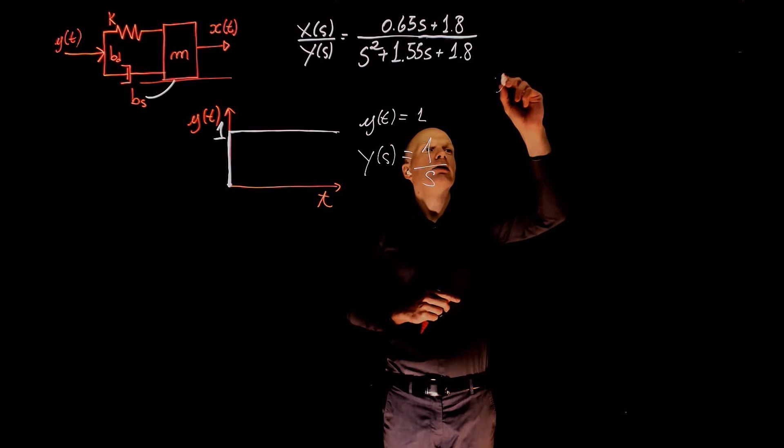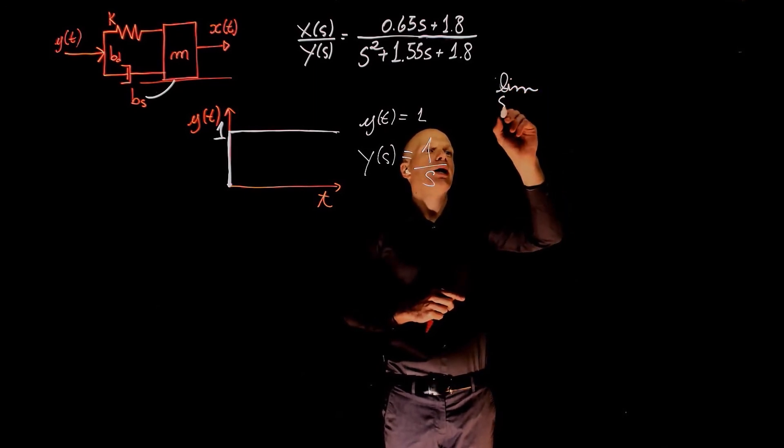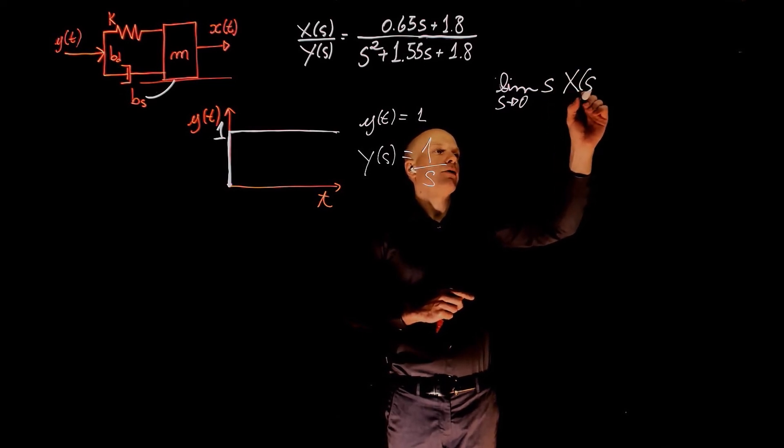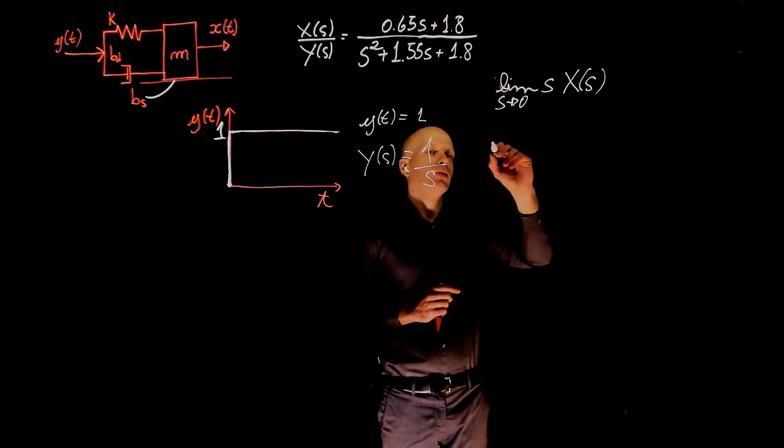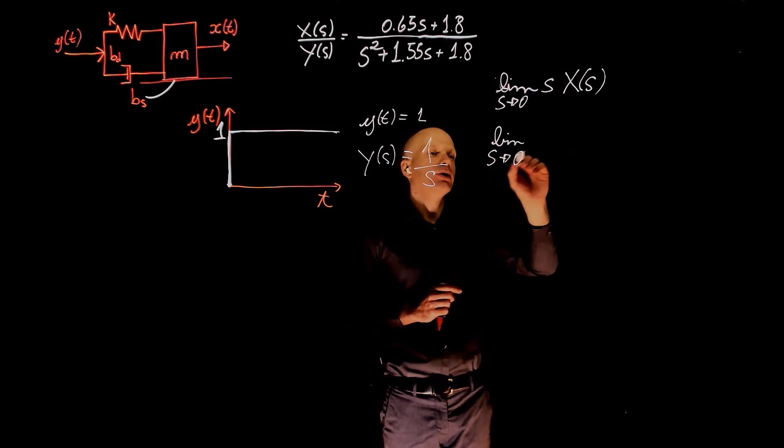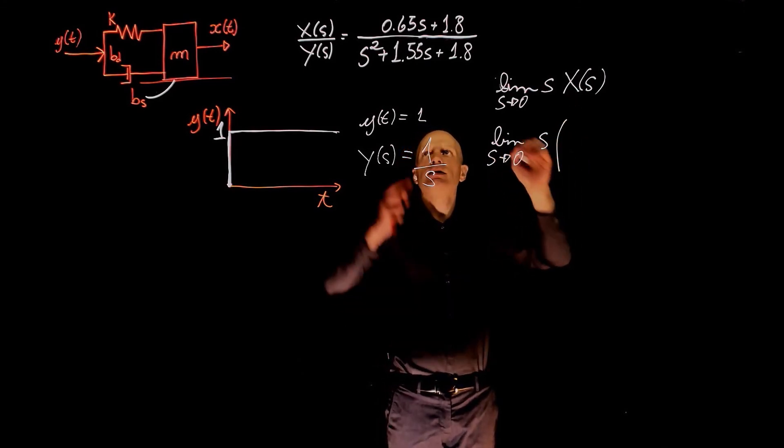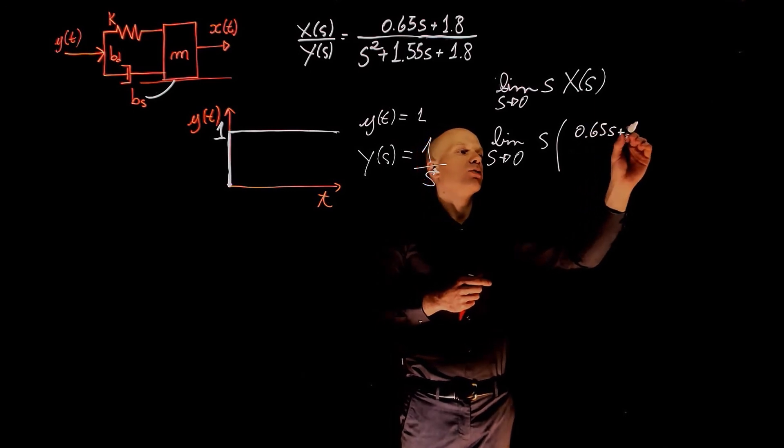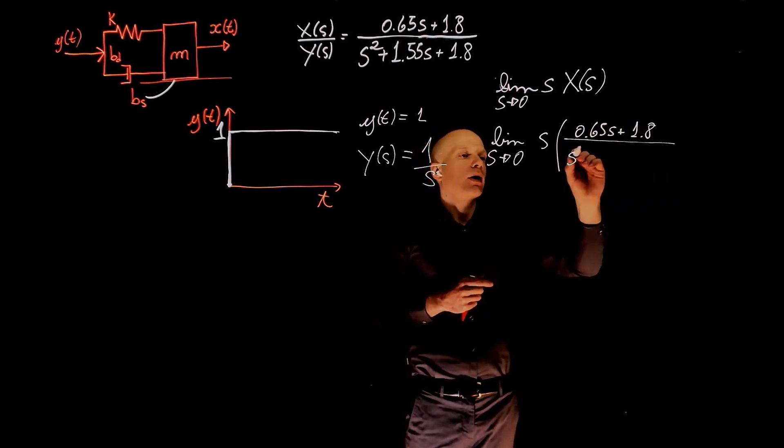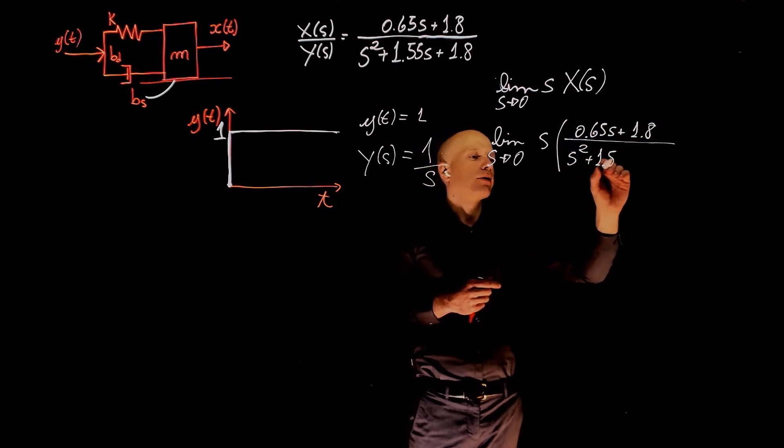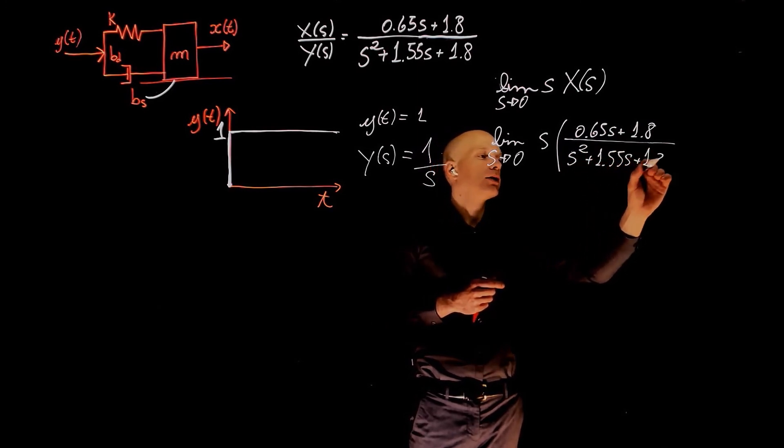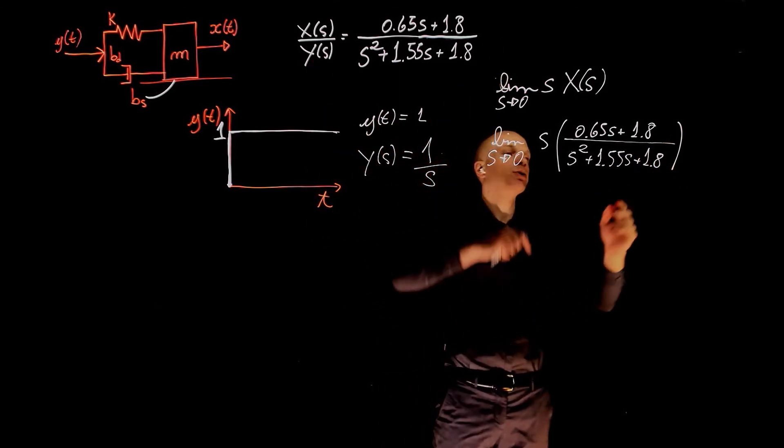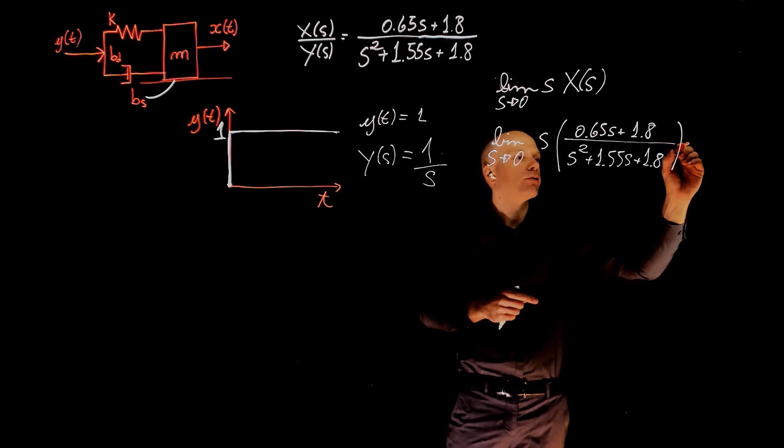The final value of x(t) can be now calculated by taking the limit when s tends to 0 of s times x(s). 0.65 s plus 1.8 divided by s squared plus 1.55 s plus 1.8. And this times the input y(s) that now moves to this side and y(s) is 1 over s.